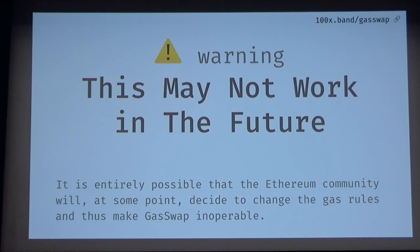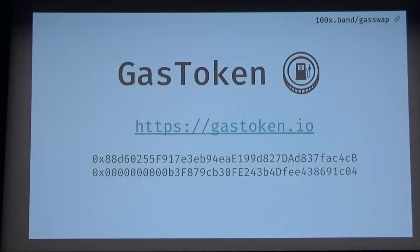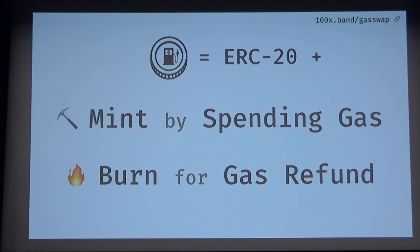As a warning, GasToken is something that may not work in the future. The Ethereum Foundation is working on the state-rent proposal, for example, and that may make GasToken unusable in the future, which also means GasSwap will not work too. GasToken, available at gastoken.io, is an ERC20 that you can mint by spending some gas. You allocate storage, you get GasToken, and when you burn the token, you get a gas refund to save on gas costs in the future.